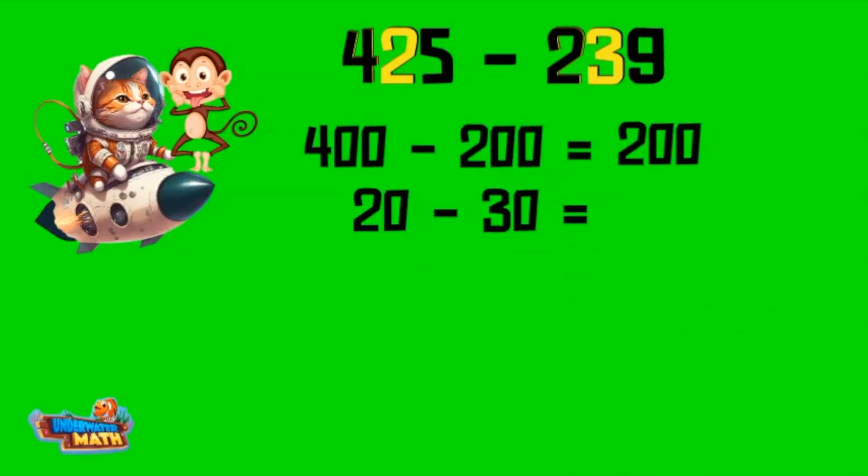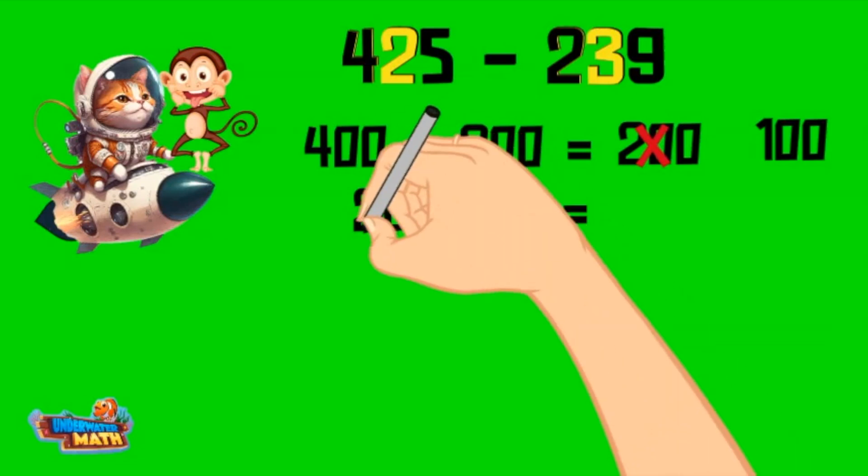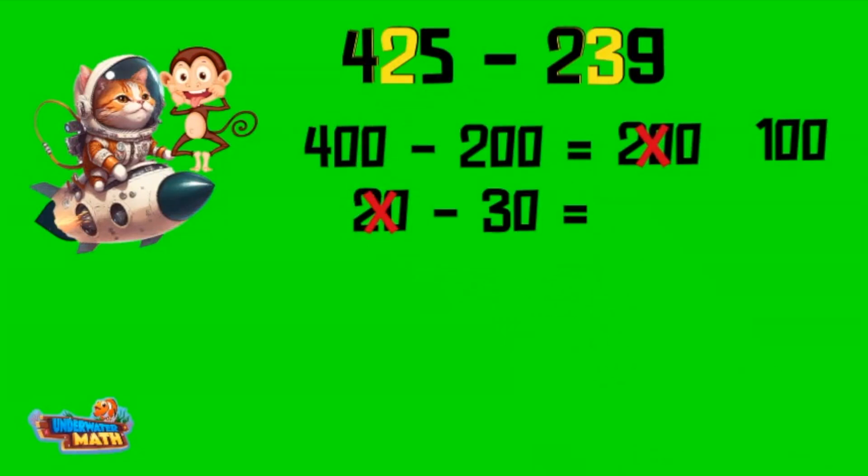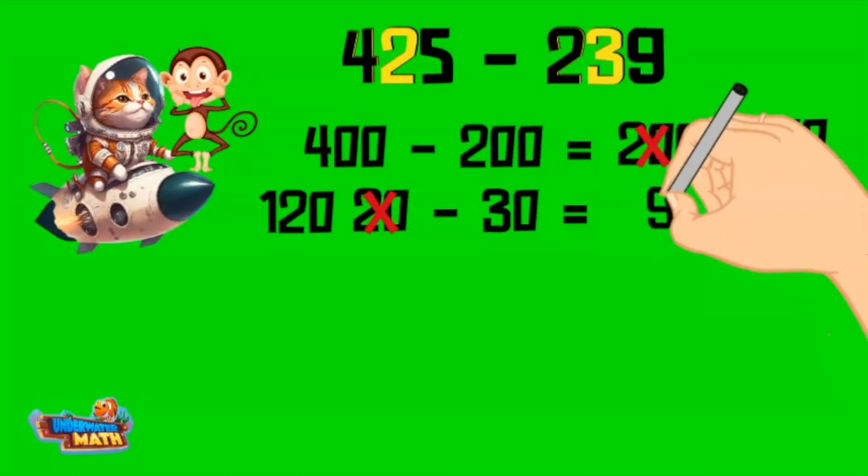I am stuck. No worries, pal. We can borrow from the hundreds place. If I take 100 from the hundreds place, I get 100. Then add the 100 to the tens place: 100 plus 20 equals 120. Now you can subtract 120 minus 30 for a total of 90. Thanks for your help.